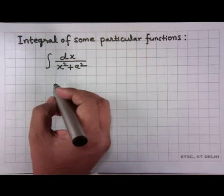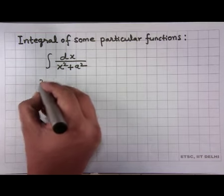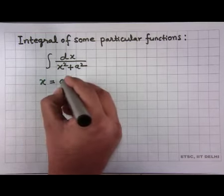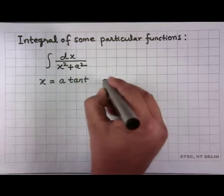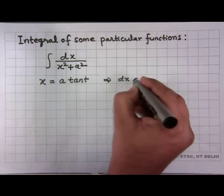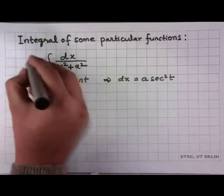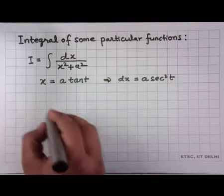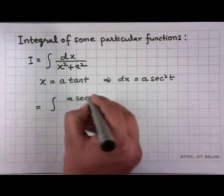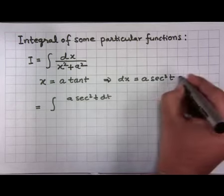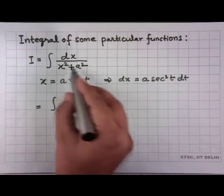I will show you what technique we can use to derive this integral. What we do is substitute x = a·tan(t), then this gives us dx = a·sec²(t)dt, and then the integral I becomes a·sec²(t)dt divided by (x²+a²).